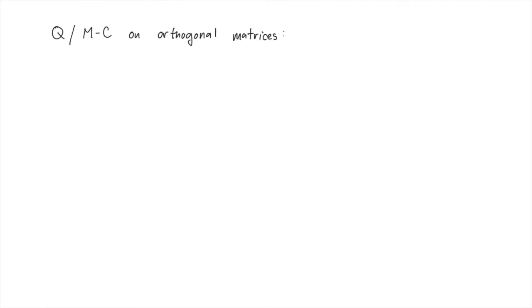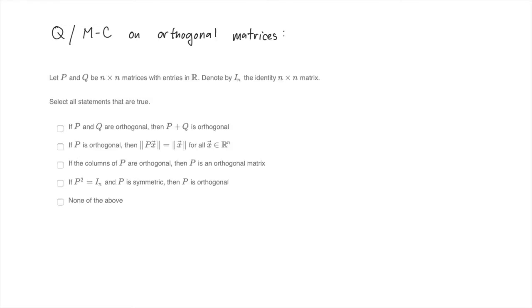Okay, moving on. Let's do another multi-select problem. This one is about orthogonal matrices, and you may remember it from the midterm. We suppose that P and Q are real n by n matrices, and we'll answer questions about the orthogonality of P and Q. Again, pause the video and try to do this on your own before moving on. Alright, well, we won't jump around this time. Let's tackle the first one.